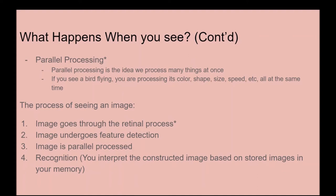Just a quick review: the process of seeing an image goes as follows — the image goes through the retinal process, then undergoes feature detection, then is parallel processed, and then is recognized. By the time it gets to recognition, you've constructed an image, and your brain interprets it based on stored images in your memory.